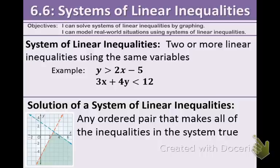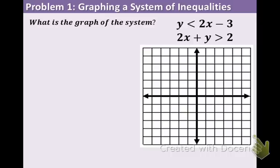Let's take a look at our first example. What is the graph of this system? y is less than 2x minus 3, as well as 2x plus y is greater than 2. You would want to get two different colors. For the first inequality, it is going to be shaded below because of the less than symbol, and it's going to be a dashed boundary line because there is no line underneath the inequality symbol.